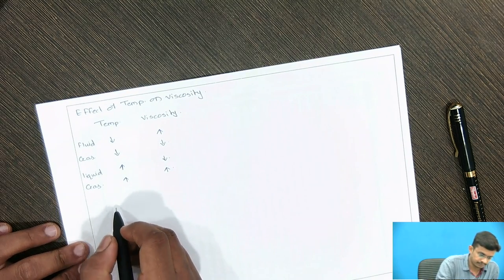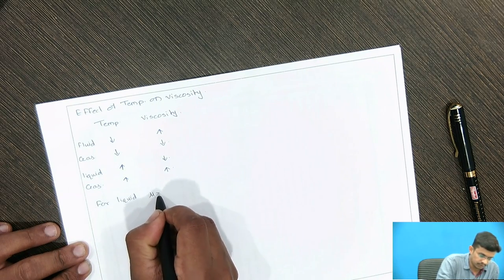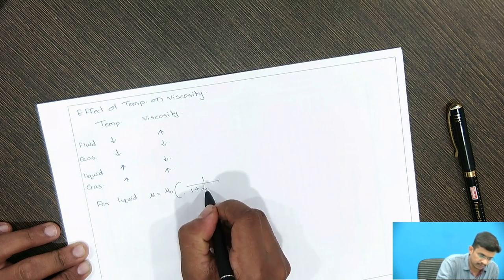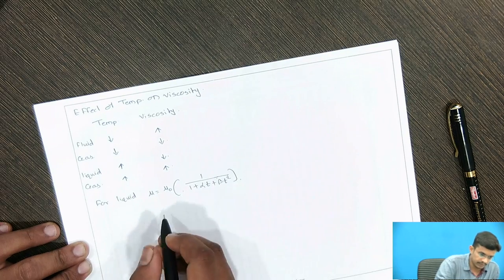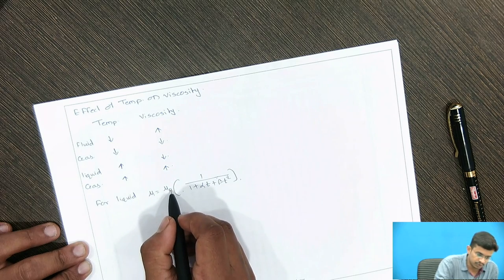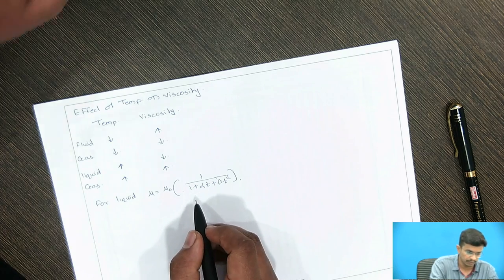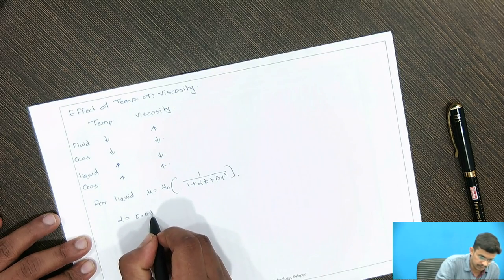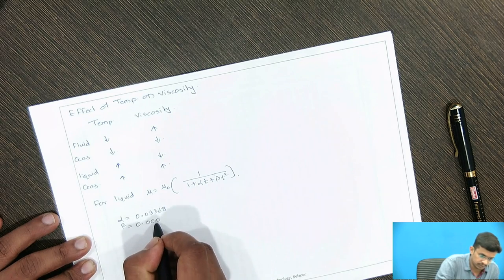For liquid, the formula is: mu equals mu₀ into 1 upon (1 + αt + βt²), where mu is the viscosity of liquid at t degrees Celsius, mu₀ is the viscosity of liquid at 0 degrees Celsius, and alpha and beta are constants for the liquid, where alpha equals 0.033368 and beta equals 0.000221.